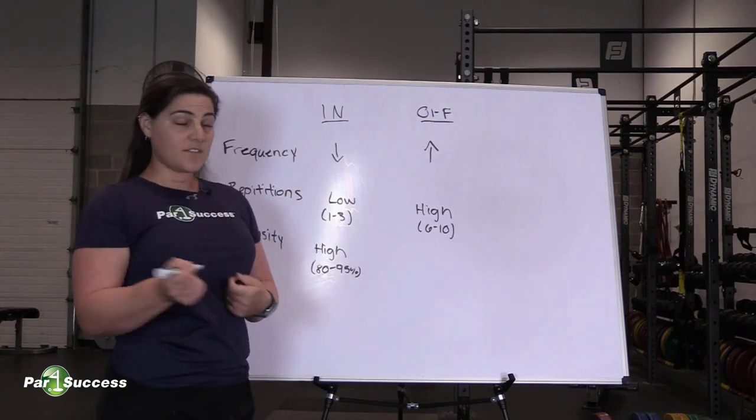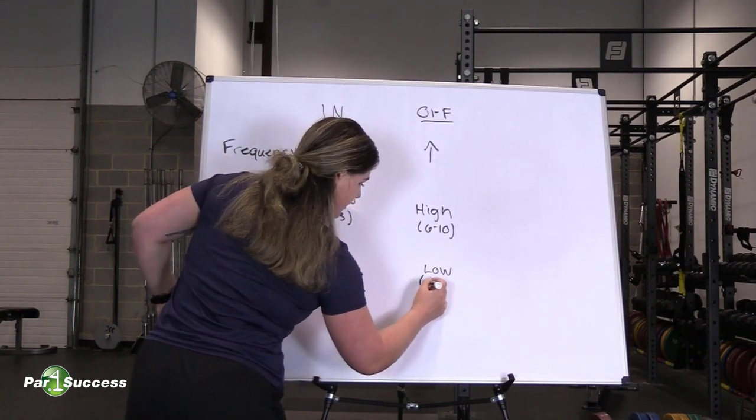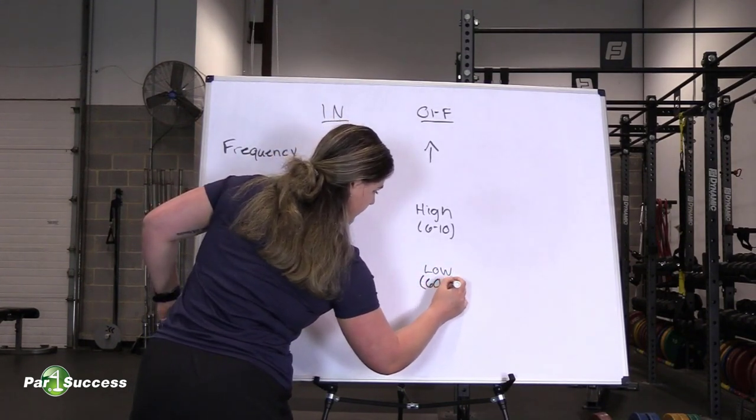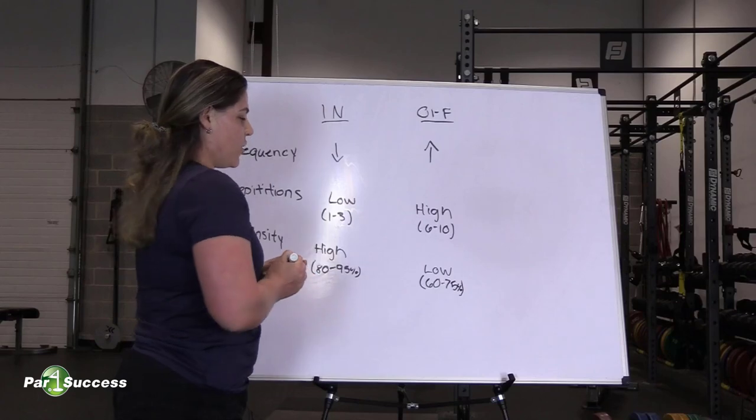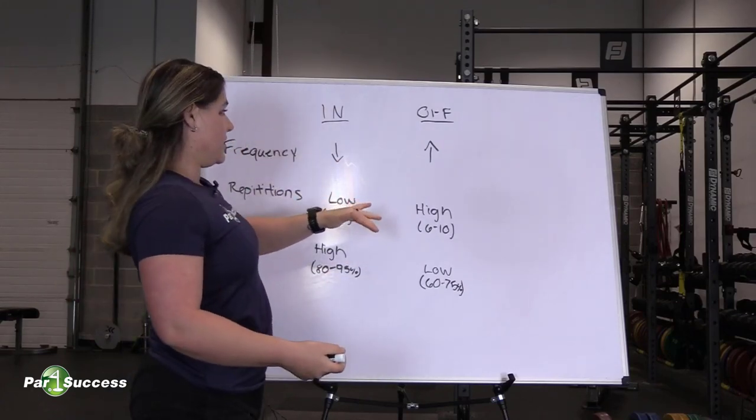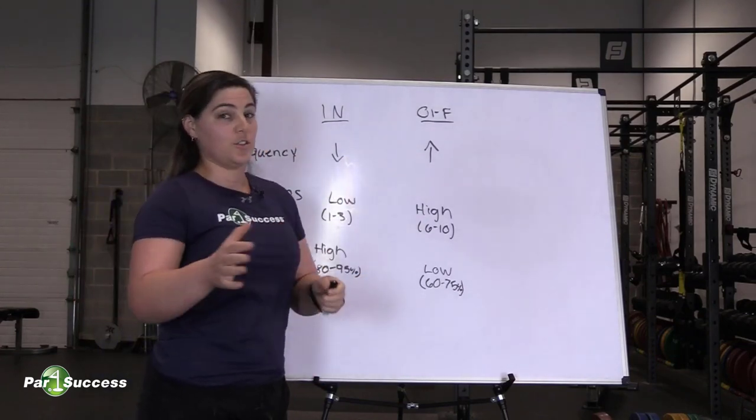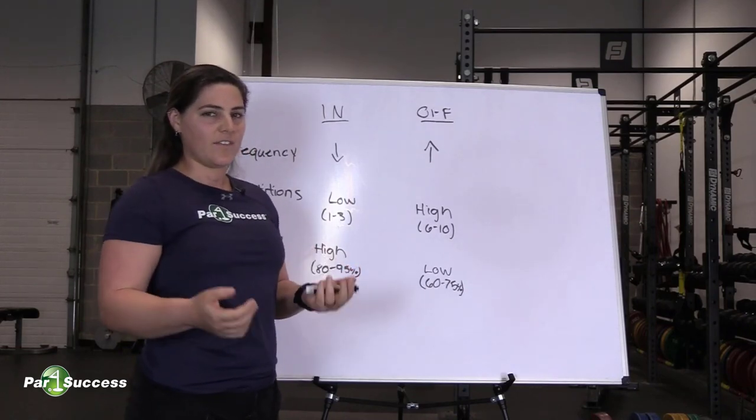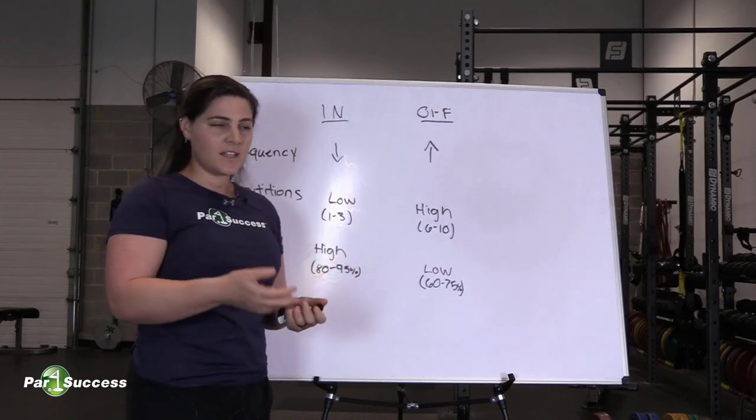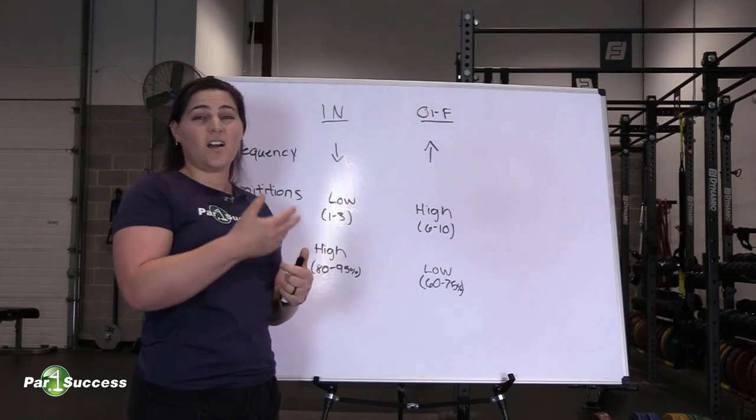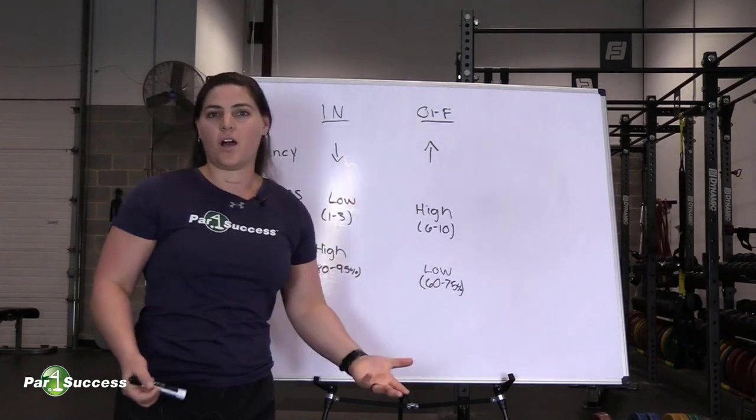When we talk about intensities for the off-season, they're going to be a little bit on the lower side, about 60 to 75 percent. So our repetitions are high, we're in the gym more, and our intensities are lower. With that same 100-pound max, now I'm only using 60 to 75 because my reps are higher. And this is driving conditioning, muscle growth in some cases, and I am putting more work in. It's going to cause a little more soreness, a little more fatigue, which I can afford in the off-season because I'm not playing golf as much.